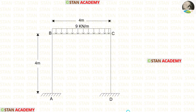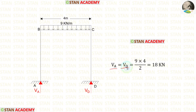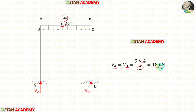This frame is a non-sway type frame because we have symmetrical load and symmetrical dimensions. Since this frame has symmetrical loading and symmetrical dimensions, we can easily find the vertical reactions Va and Vd. To find Va and Vd, we multiply the UDL 9 by the distance 4 and divide by 2, giving Va and Vd equal to 18 kN.